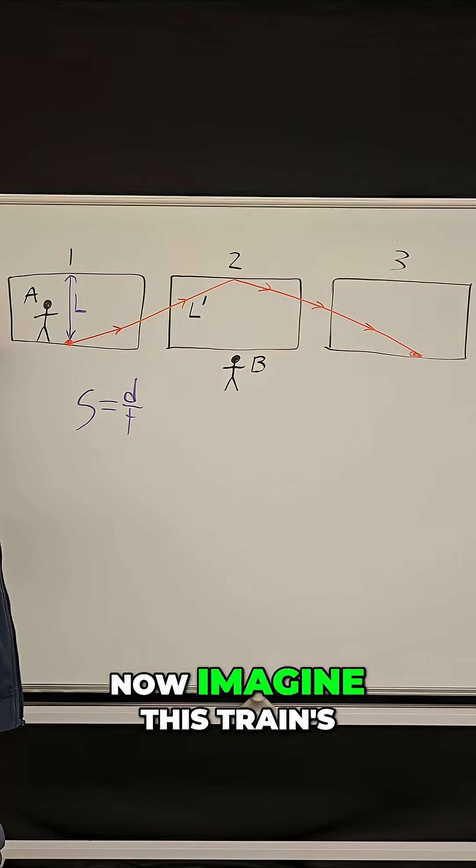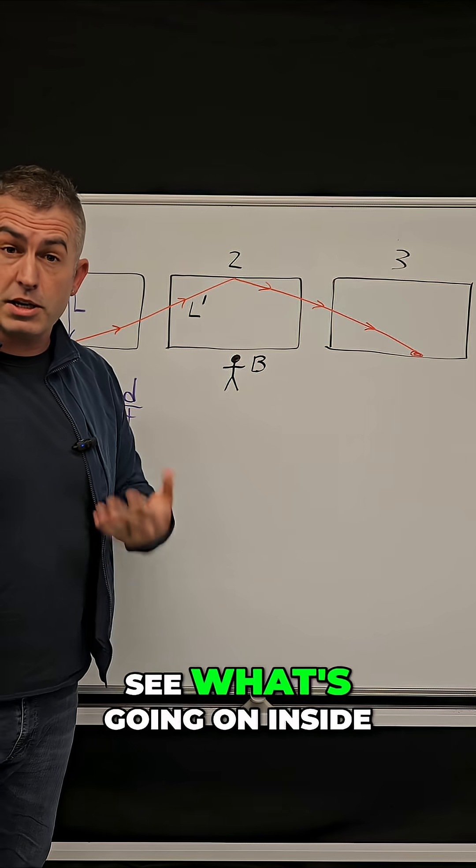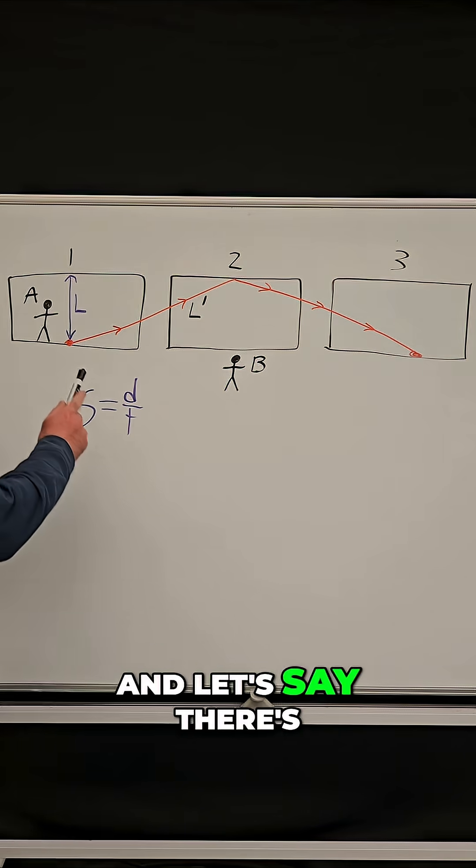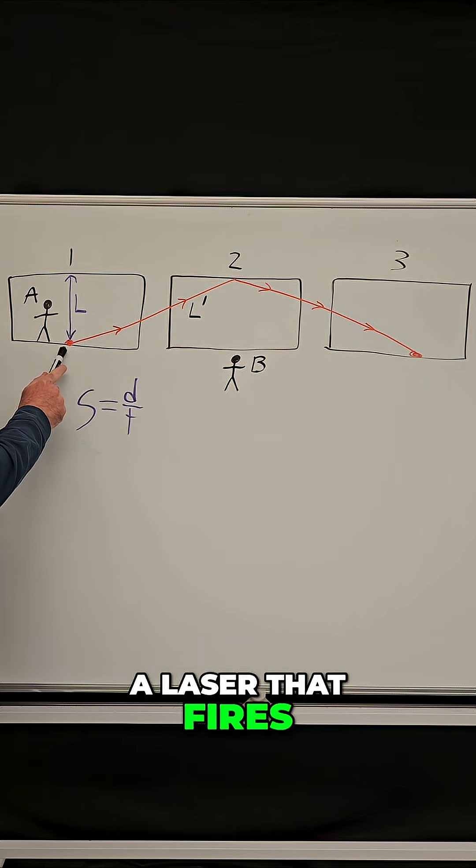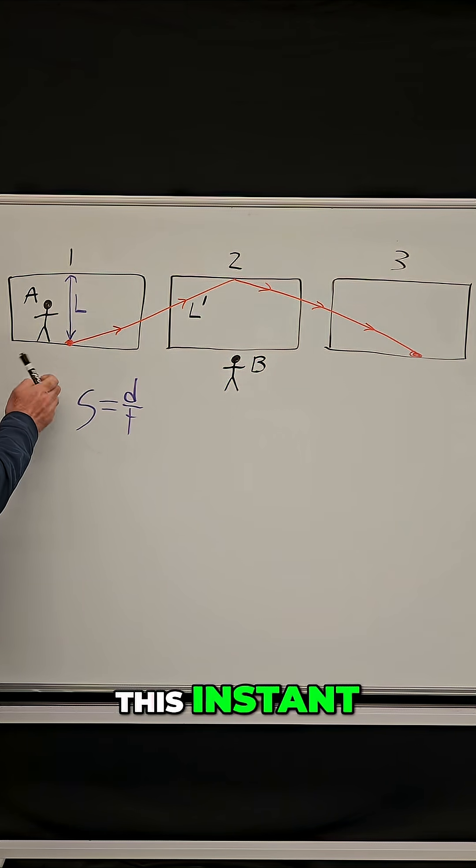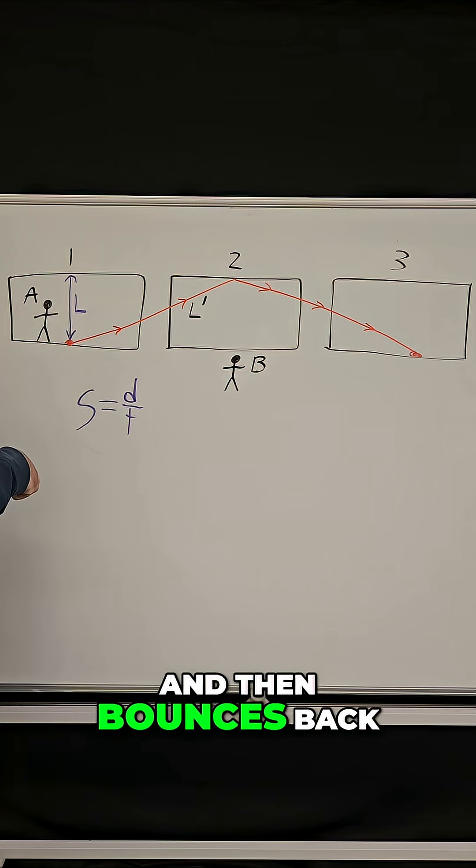Now imagine this train's wall is invisible so that person B can see what's going on inside. And let's say there's a laser that fires at position one. So at this instant, the laser shoots straight up, hits the ceiling, and then bounces back.